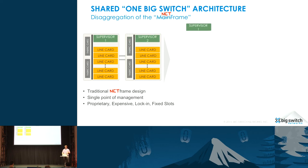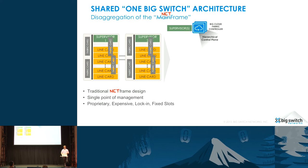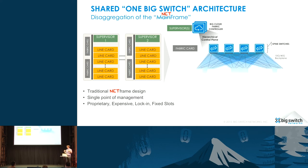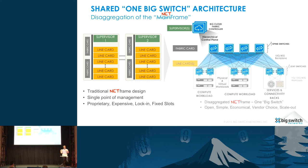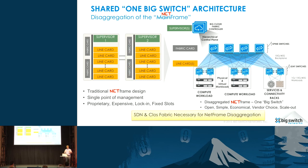What Big Switch Networks does is we actually pull that supervisor card out of the box and call it a controller. We pull those fabric line cards out and call those spine switches. We pull the line cards out and call those leaf switches. What we have done is actually recreated all the elements of this traditional big switch using commodity, low-cost, data center 1U pizza box switches.